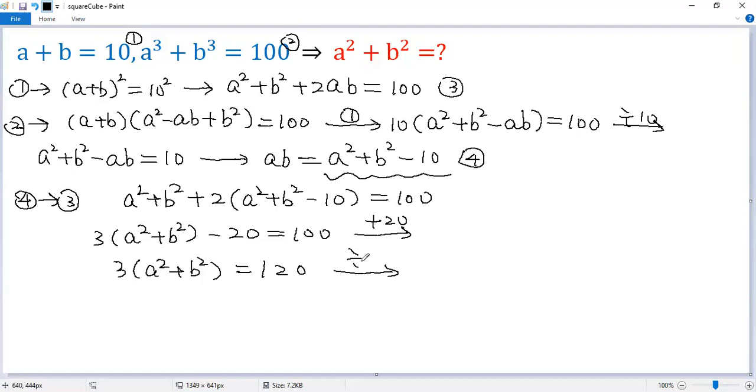Finally, dividing both sides by 3. So we get a squared plus b squared equals 40. That is the final answer.